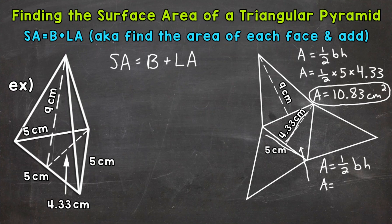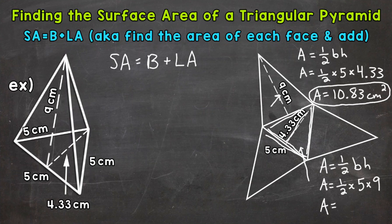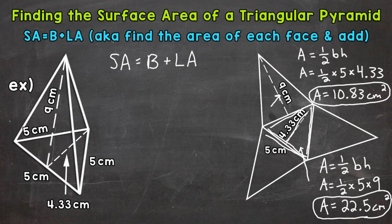Now we'll plug in. The base of all the lateral faces is five, so let's plug in five times the height of nine. Now we're ready to solve. One-half times five times nine gives us an area of 22.5 square centimeters. So there's the area of each of our lateral faces.